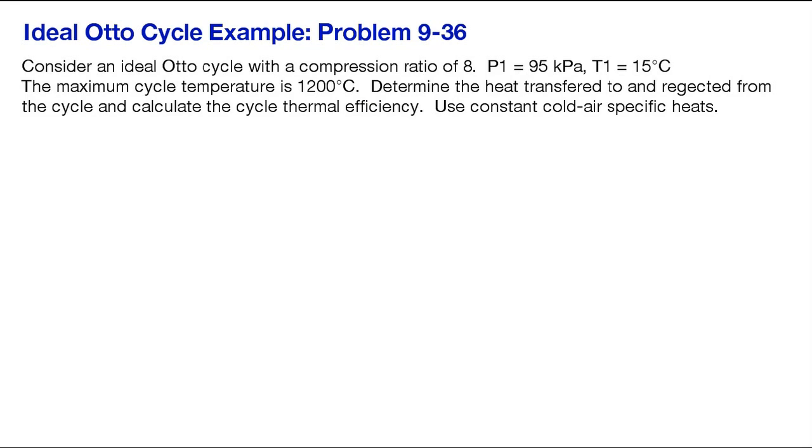This example looks at the ideal Otto cycle. Here's a problem from the textbook where you're asked to calculate the thermal efficiency. You're given a compression ratio, initial pressure, initial temperature, and the maximum temperature of the engine.